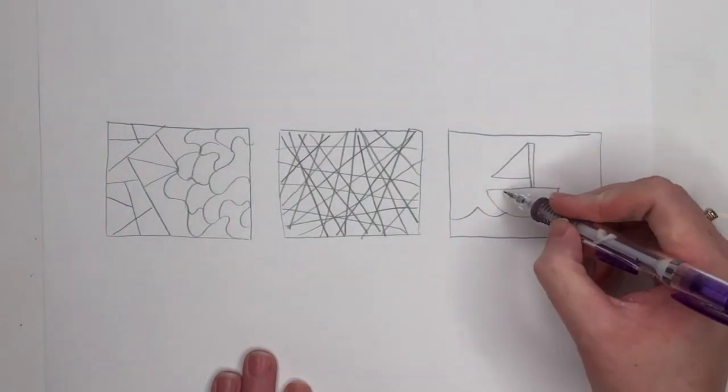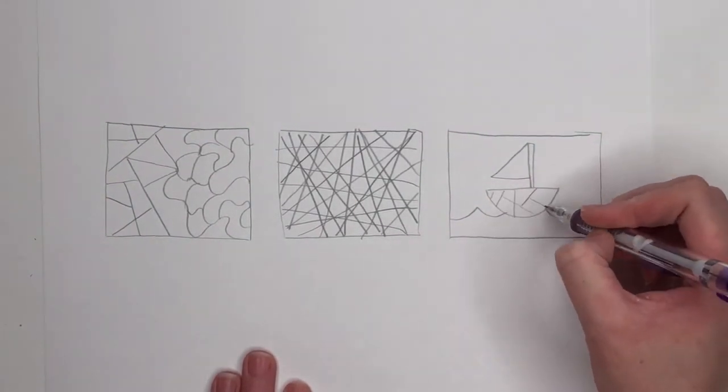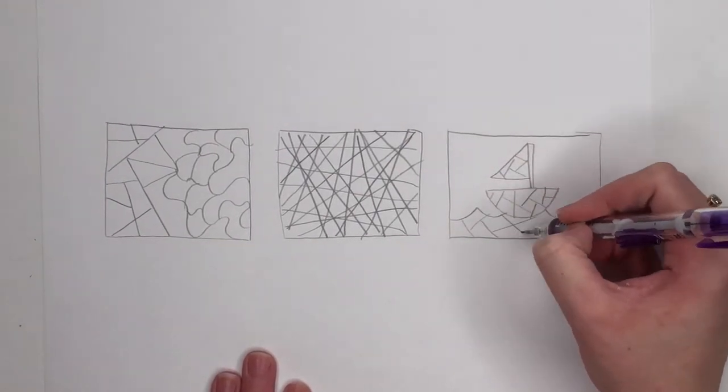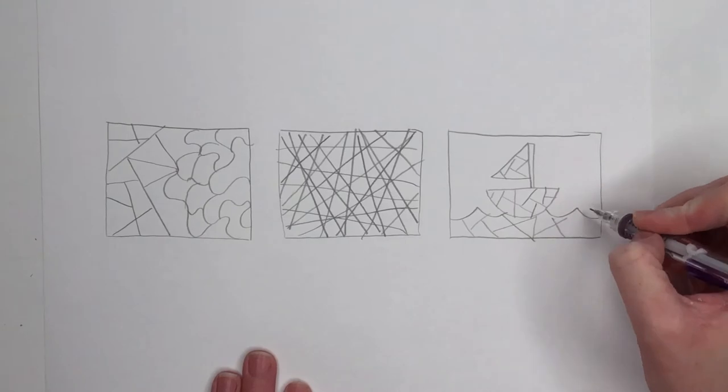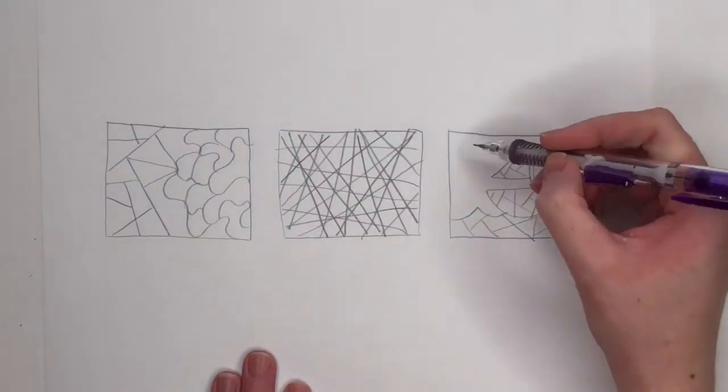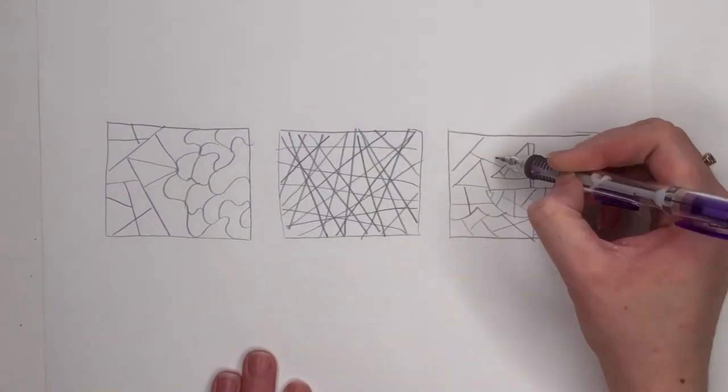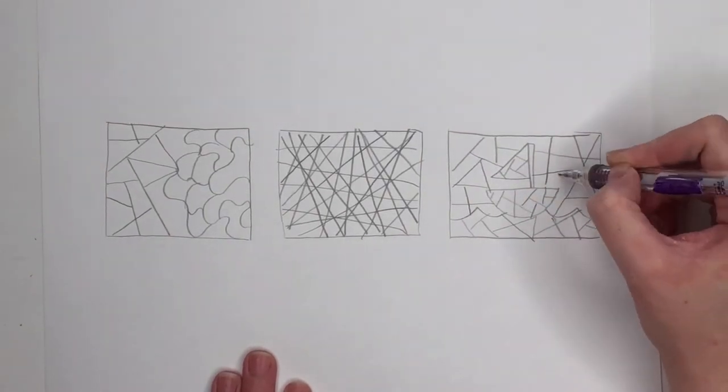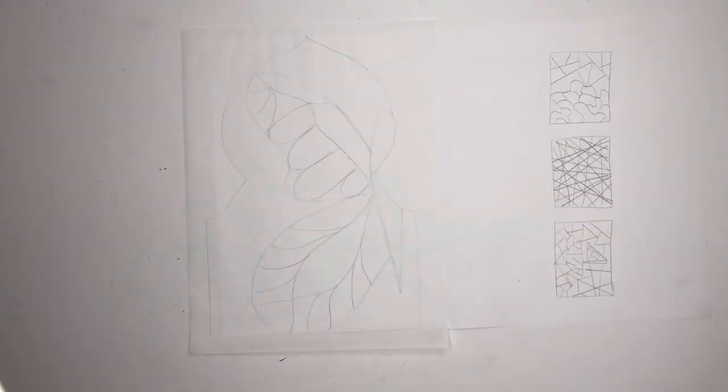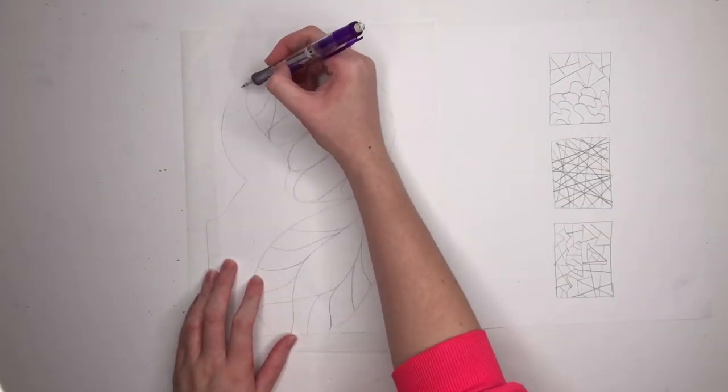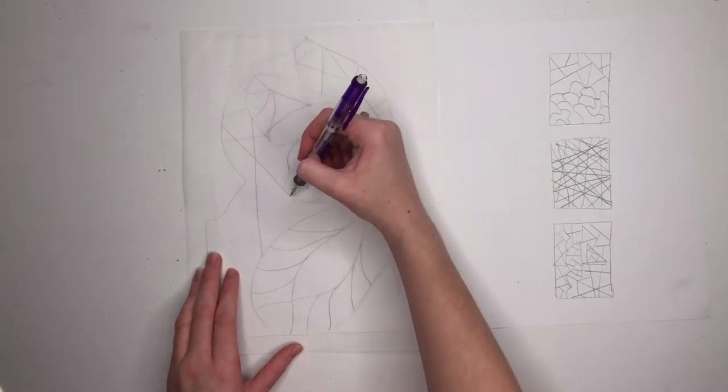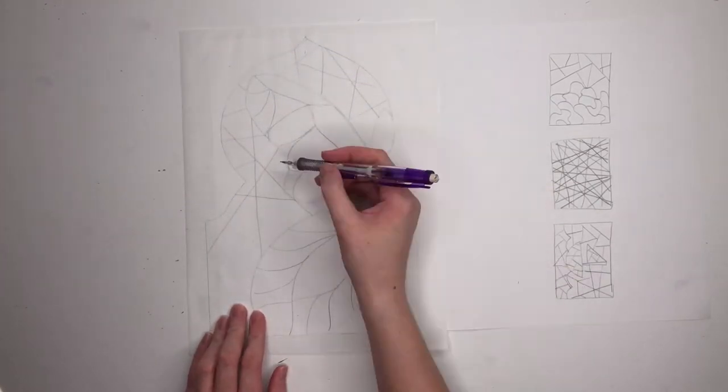Then you can start to break those big shapes up into smaller shapes. When you get a design you like, draw it lightly on your tracing paper that way it's easy to erase if you need to.